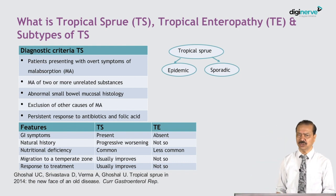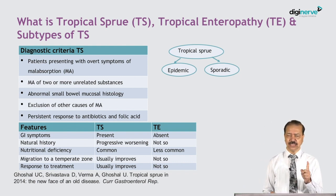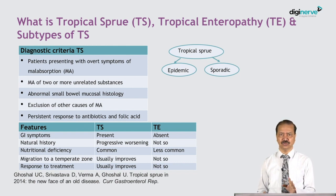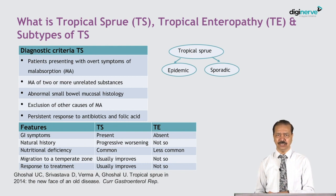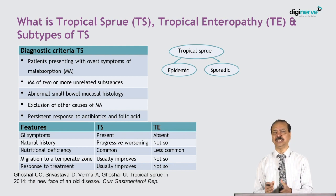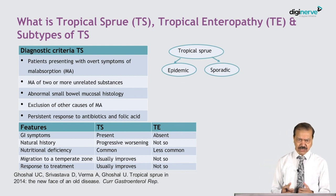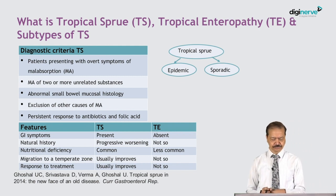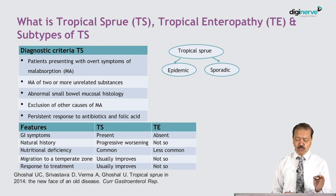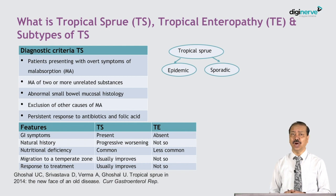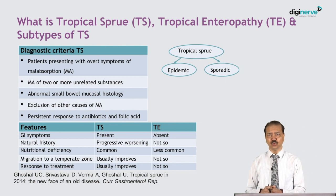We diagnosed this patient with tropical sprue because: (1) he had malabsorption of two unrelated substances; (2) duodenal biopsy showed partial to subtotal villus atrophy; (3) all other specific causes of malabsorption were excluded; and (4) he responded to treatment with folic acid and tetracycline directed against tropical sprue.